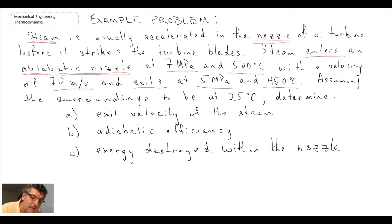The other thing it tells us is the surroundings are at 25 degrees C. Whenever you see that, that usually hints towards exergy analysis because you need to know the dead state or the surroundings. It's telling us to solve for three things: exit velocity of the steam in the nozzle, so that would be velocity 2, adiabatic efficiency of the nozzle, and the final thing, exergy destroyed.